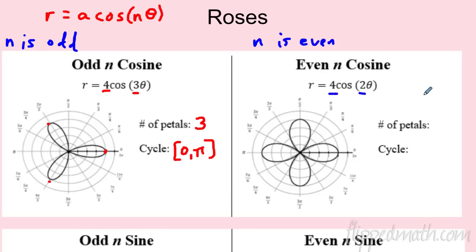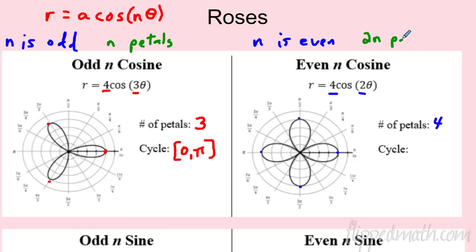For four cosine two theta, n is even. Count the petals: four petals. So the rule is: when n is odd, you get n petals; when n is even, you get two n petals — so two made four. Write that down because you'll need to identify petals or match graphs to equations. For an even rose, the cycle is two pi.